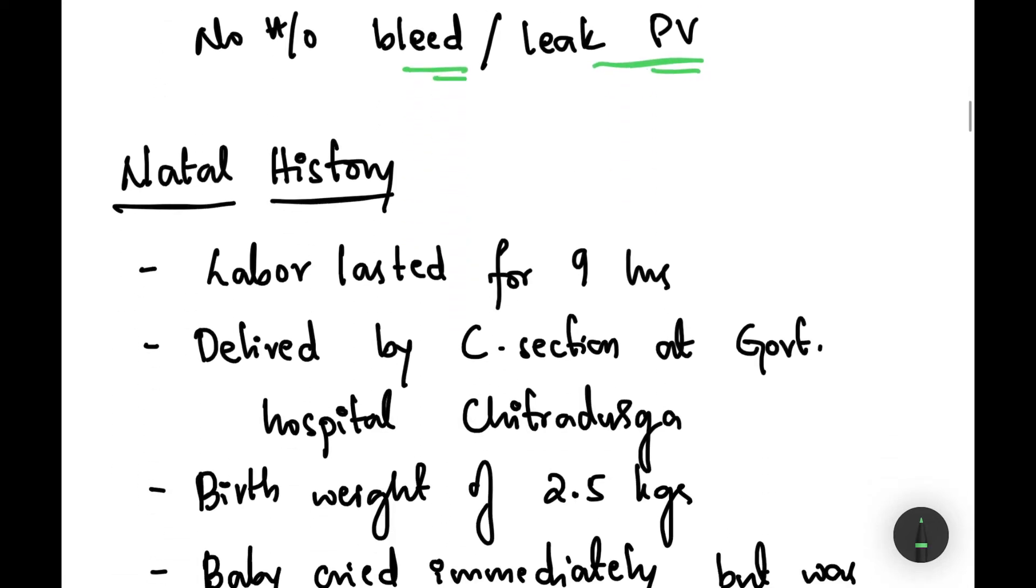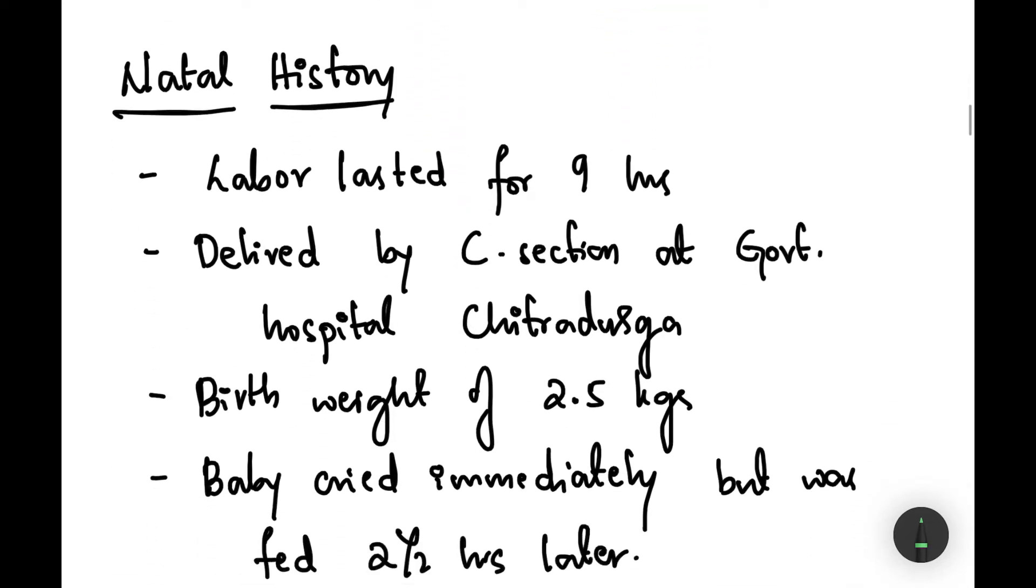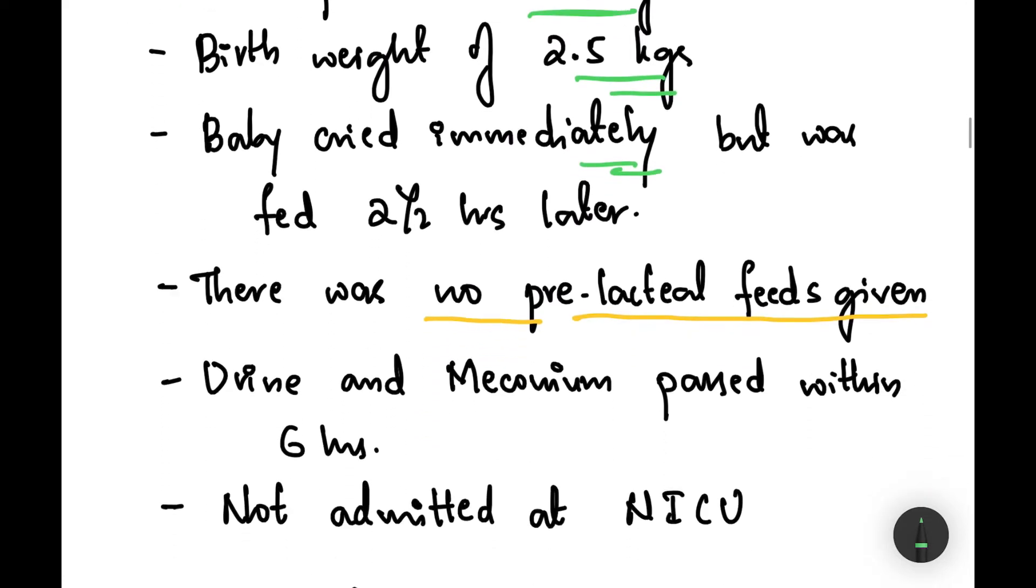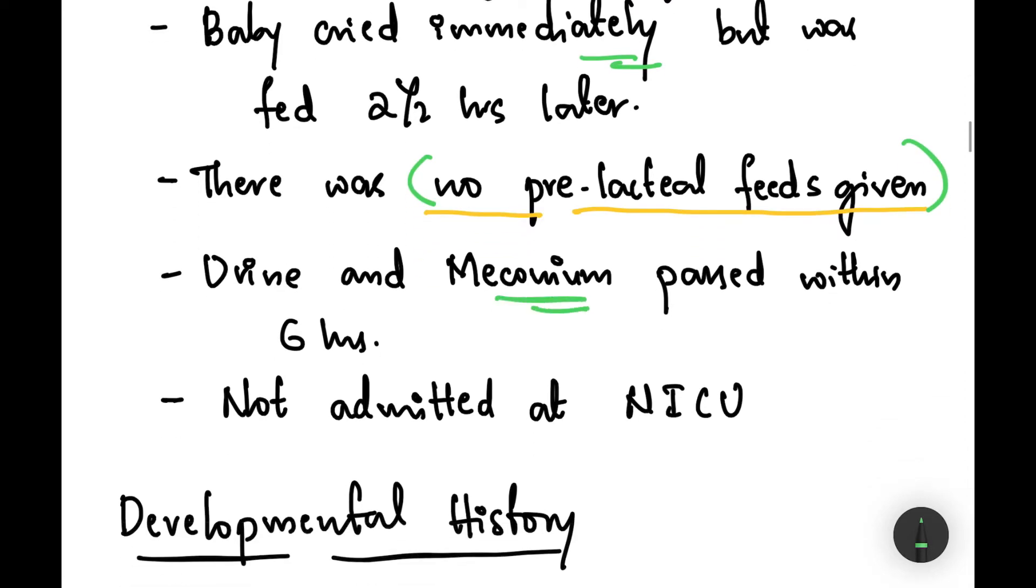Moving on to the natal history, the labor lasted for nine hours and it was delivered by C-section at Government Hospital Chitradurga. The birth weight of the baby was 2.5 kg. The baby cried immediately after birth but was fed two and a half hours later. There was no pre-lacteal feeds given. Urine and meconium were passed within six hours and it was not admitted at NICU.